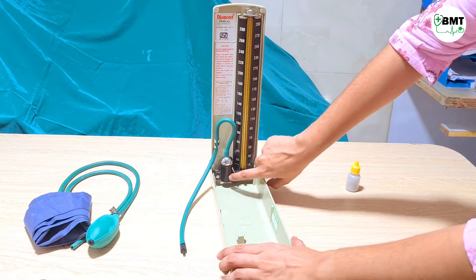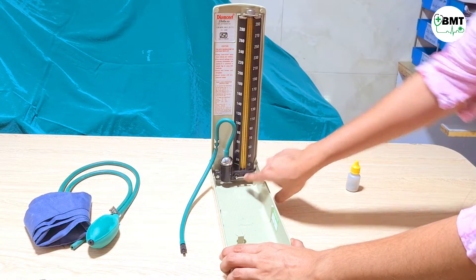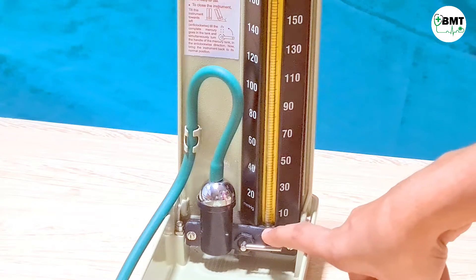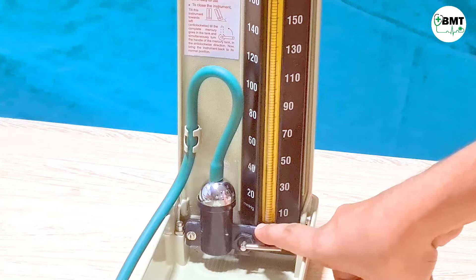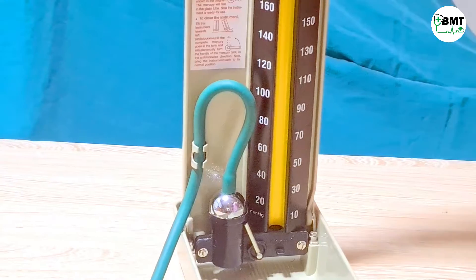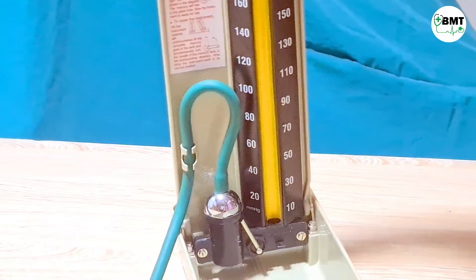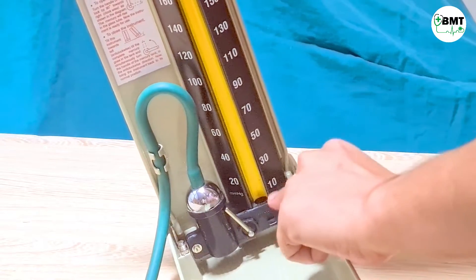Now once placed, open the lock and check. Now as you can see, this mercury has not reached zero, so repeat the process. While filling mercury, one easy way is that you can tilt it and then fill over here.